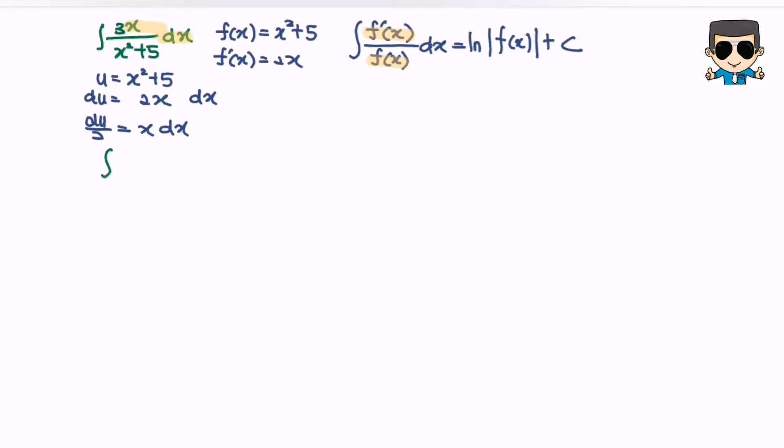Integrate 3 over x squared plus 5, x dx. So let's substitute. 3 integrate 1 over u. Notice that we have x dx where it is du over 2.